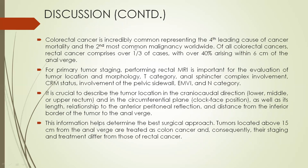Colorectal cancer is incredibly common, representing the fourth leading cause of cancer mortality and the second most common malignancy worldwide. Of all colorectal cancers, rectal cancer comprises over one third of cases, with over 40% arising within 6 cm of the anal verge. For primary tumor staging, performing rectal MRI is important for evaluation of tumor location and morphology, T category, anal sphincter and pelvic involvement, CRM status, involvement of pelvic sidewall, EMVI, and N category. It is crucial to describe the tumor location in craniocaudal length, circumferential plane, relationship to the anterior peritoneal reflection, and distance from the inferior edge of the tumor to the anal verge. This information helps to determine the best surgical approach.